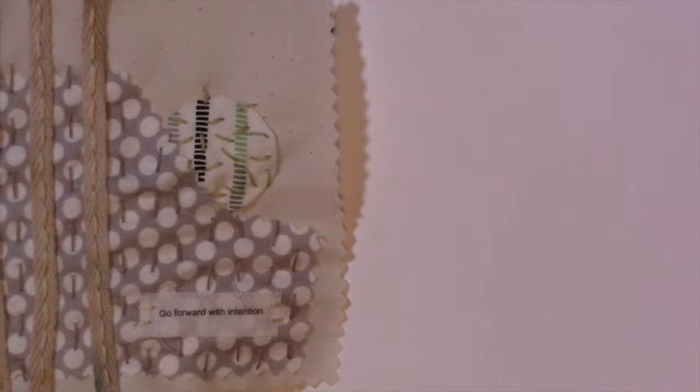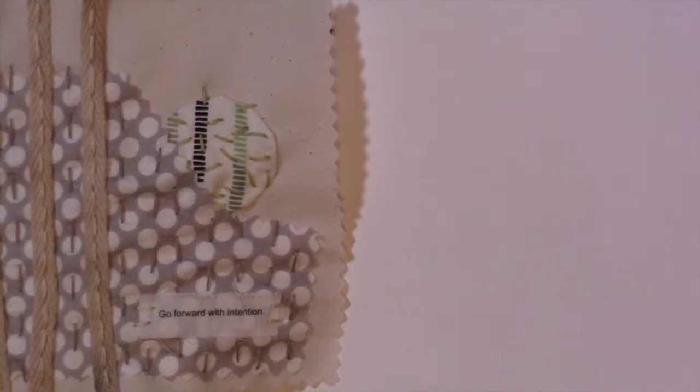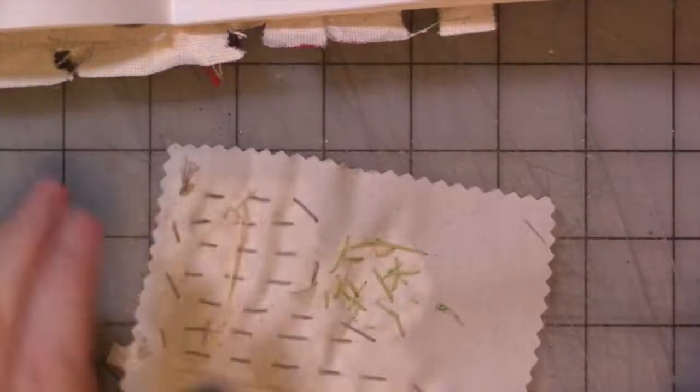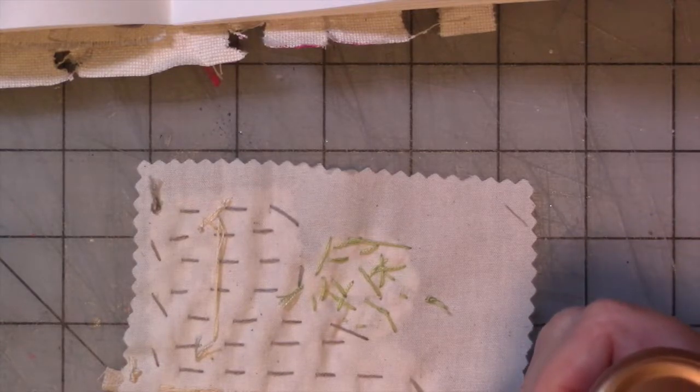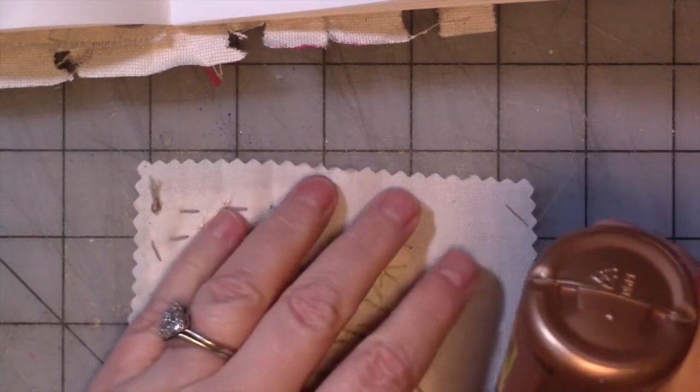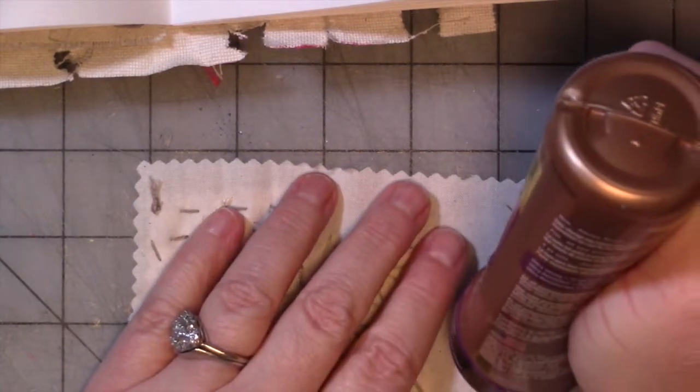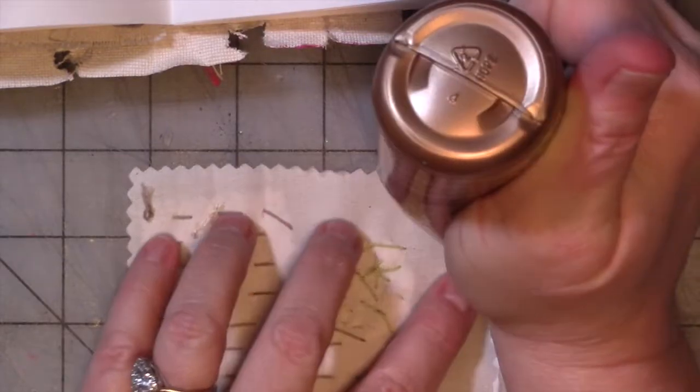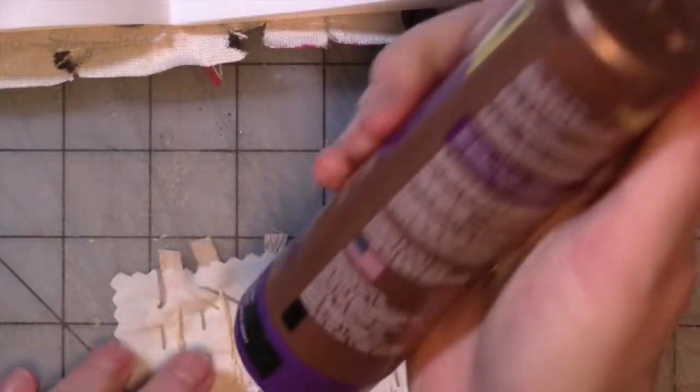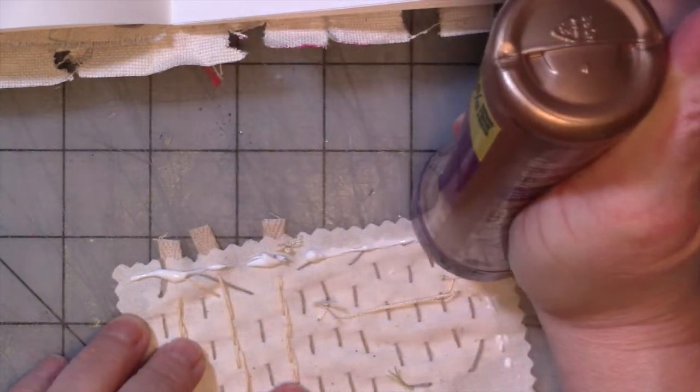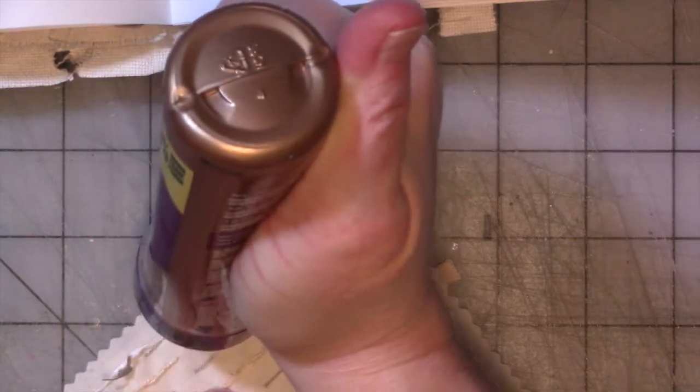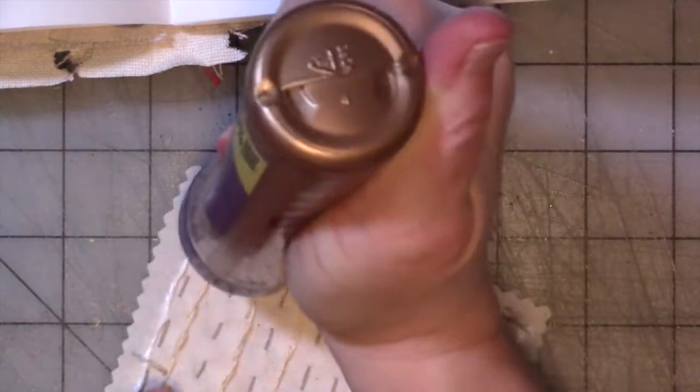Now to glue these down I usually use either yes paste or tacky glue. I don't want to get up and get the yes paste. So we're going to use tacky glue. And I just put some, if it's super wrinkly I'll iron it but I don't, I'm not feeling the need to do that. I will put some glue along the edge.